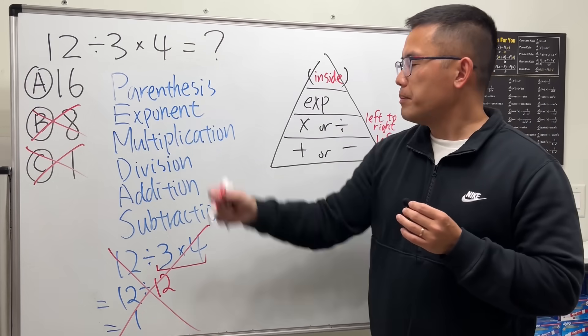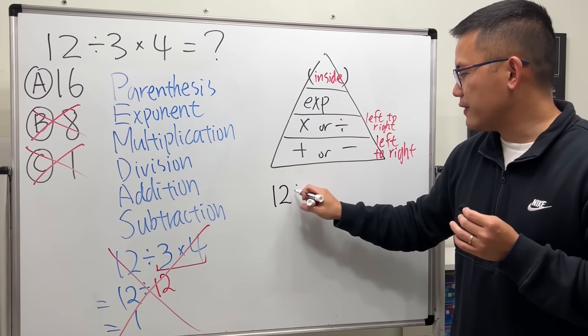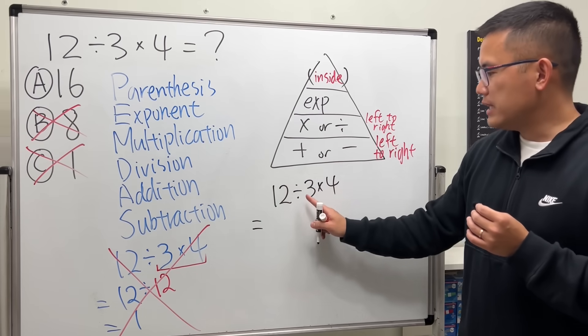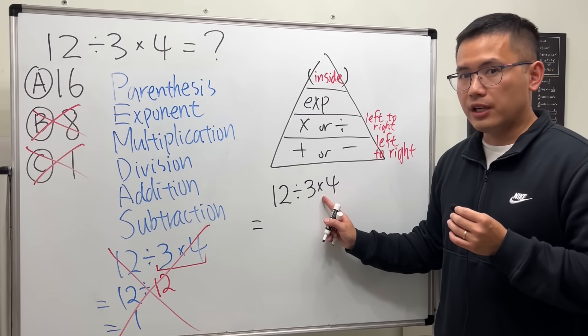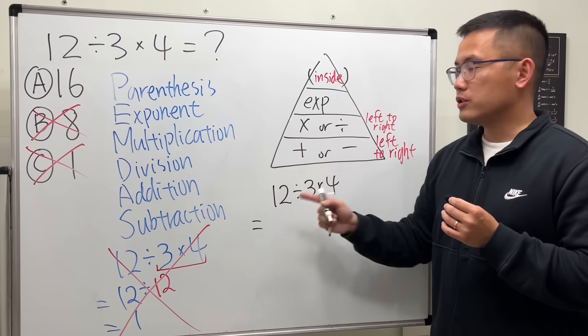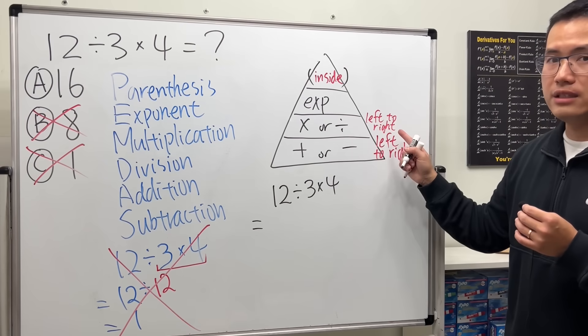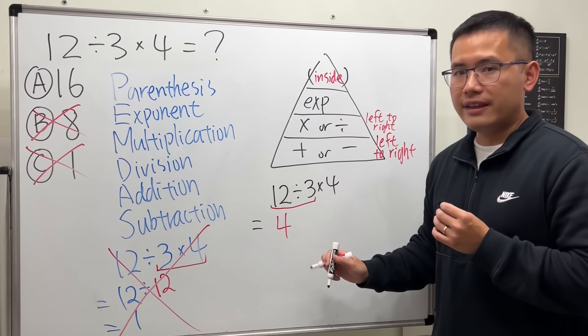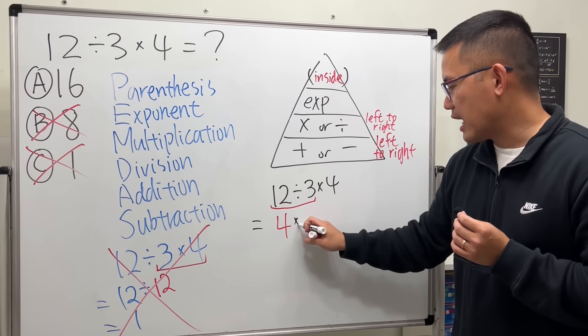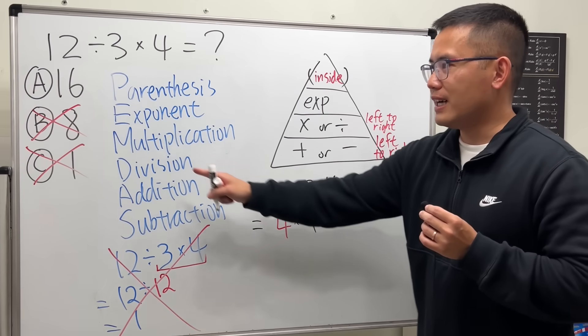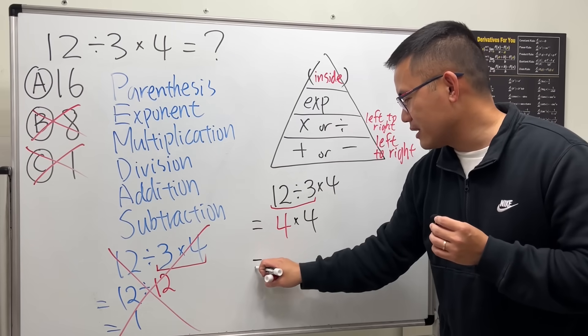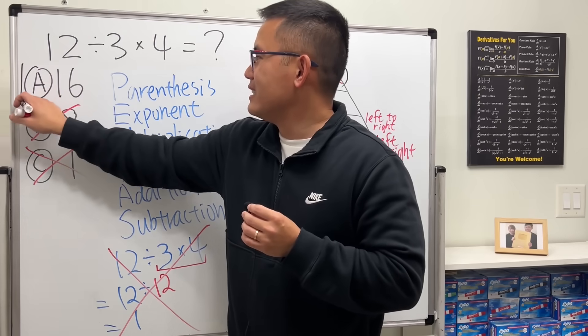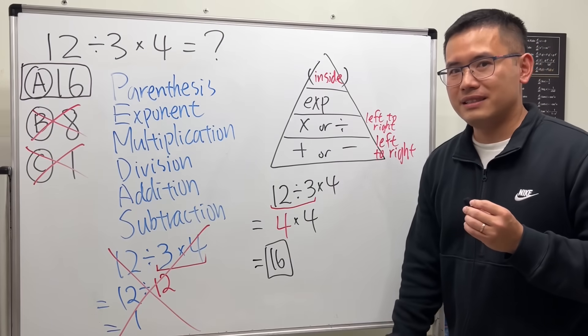Let's come back here again. If you have 12 divided by 3 times 4, well we see that we have division and also multiplication. They are on the same level, so in that case we go from left to right. So in fact we do 12 divided by 3 first, and that will give us 4. And then we write down times 4, and then 4 times 4 is 16, not 8. Make sure you know your times table well, so the answer for this is 16. Yep, just like that.